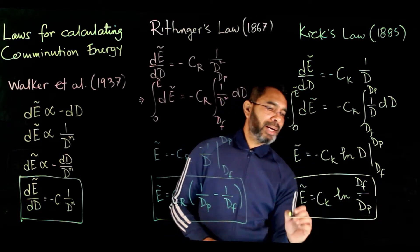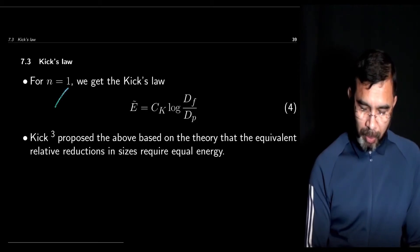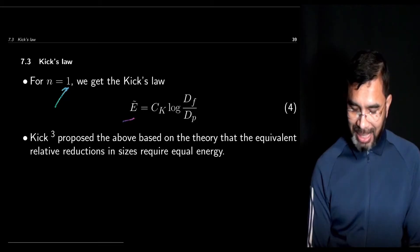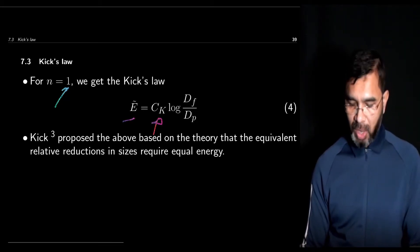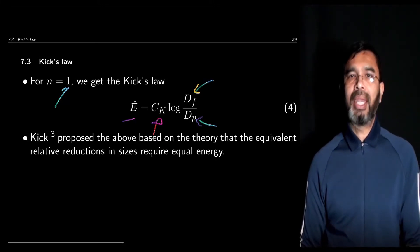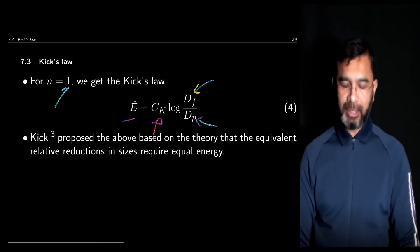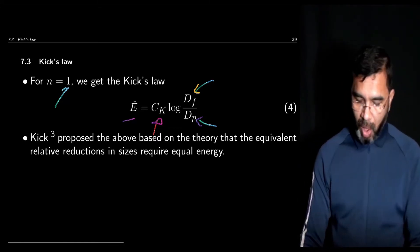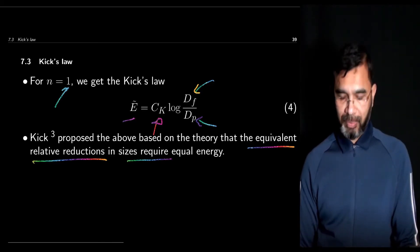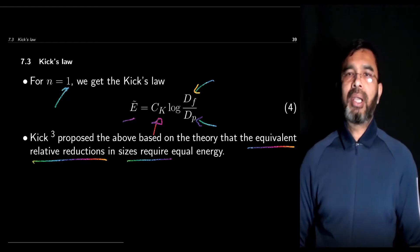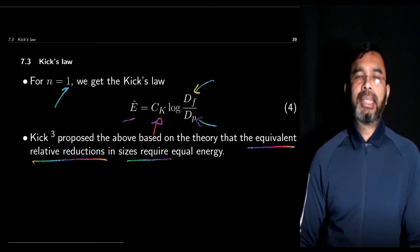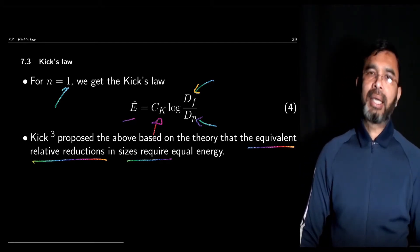This is the formulation of Kick's law. Putting n equals 1 in the general formulation gives Kick's law: Ẽ equals c_K times ln(d_F / d_P), where d_F and d_P are the sizes of the feed and the product. This law is based on the theory that equivalent relative reductions in size require equal energy — meaning the energy required depends on the ratio of product size to feed size, not on the absolute sizes themselves.